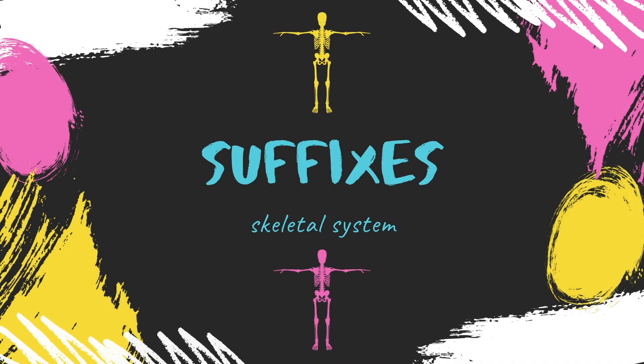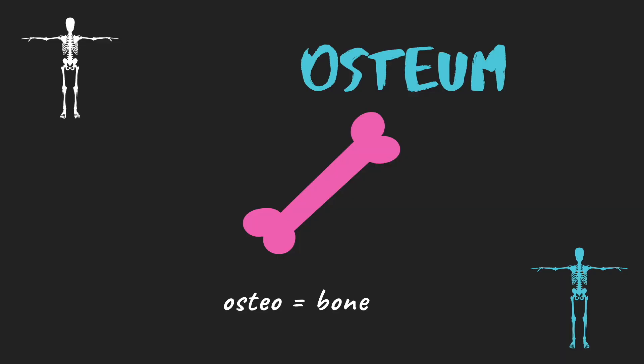Lastly, we have suffixes — how words end. 'Osteo' appears at the end of many words in the skeletal system and simply means bone. So if you remember what the prefix means — whether it's peri or endo — learn that, because together it just means bone and a different part of the bone. That's literally it. It's a difficult-looking word, but when you break it down, it's not so difficult.